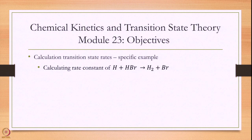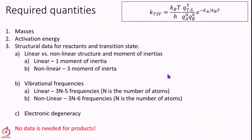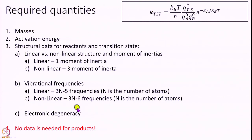Let us study this problem. In your assignments you will be solving more such problems for practice. This is the formula that we need to evaluate. The required quantities we need — and we discussed this in the last module — is a quick recap: we need all the masses of H and Br, the activation energy of the reaction, whether the reactants and transition state are linear or non-linear with their corresponding frequencies, and the electronic degeneracy of the reactants and transition state.